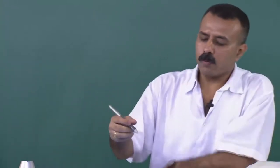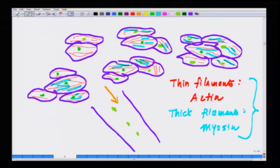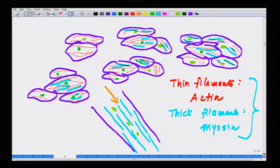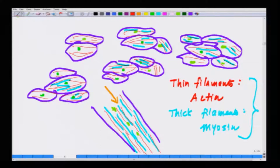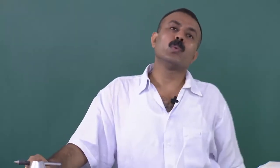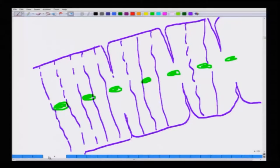When the myotubes are getting formed, the actin and myosin are realigning themselves in a specific fashion. Their realignment is such that they are interdigitated among each other, and it is this realignment of the actin and myosin filaments which leads to what you see as the striated architecture.